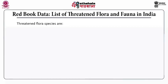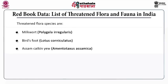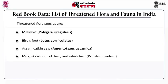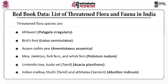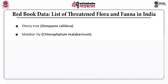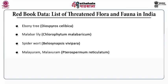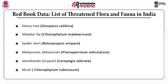Now comes the list of threatened flora species. Flora means plants and fauna means animals. The threatened plant species include: milkwort, Assam catkin yew, bird's foot, moa, skeleton, fog fern, whisk fern, umbrella tree, Indian mallow, Malabar lily, spiderwort, jimikanda, and musli — also known as Chlorophytum tuberosum.